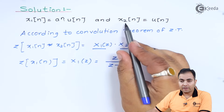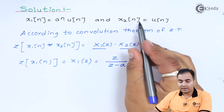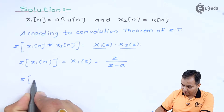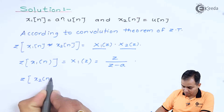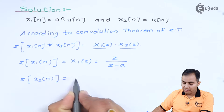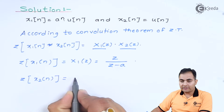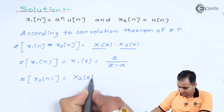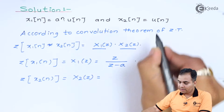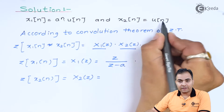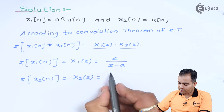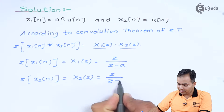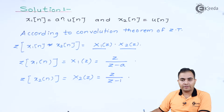Similarly, applying Z-transform to x2(n): the Z-transform of u(n) is X2(z) = z / (z − 1).